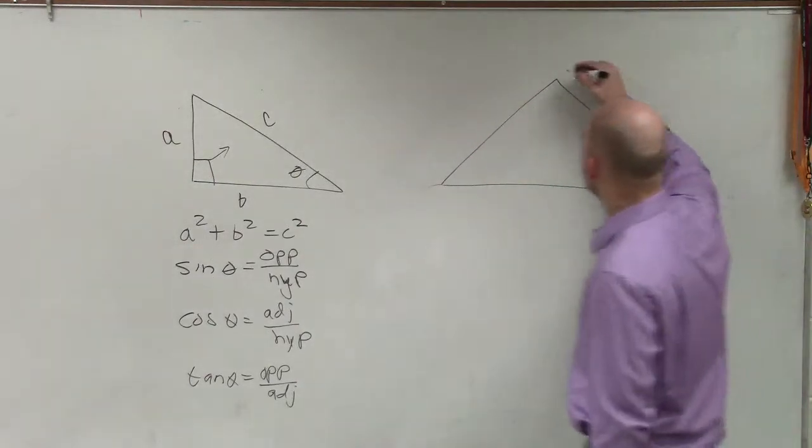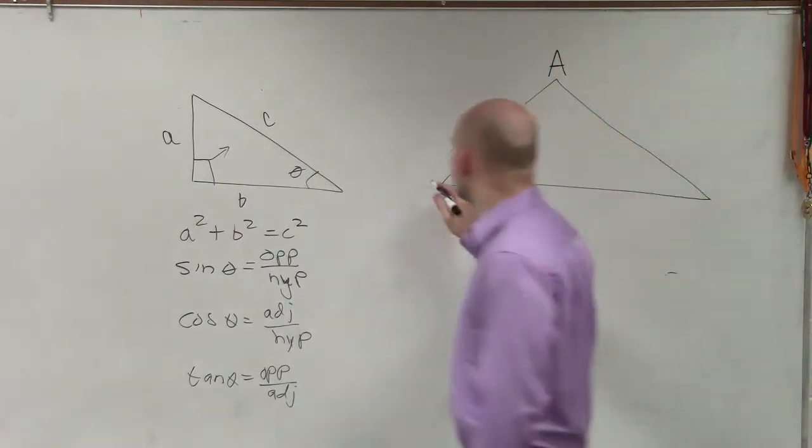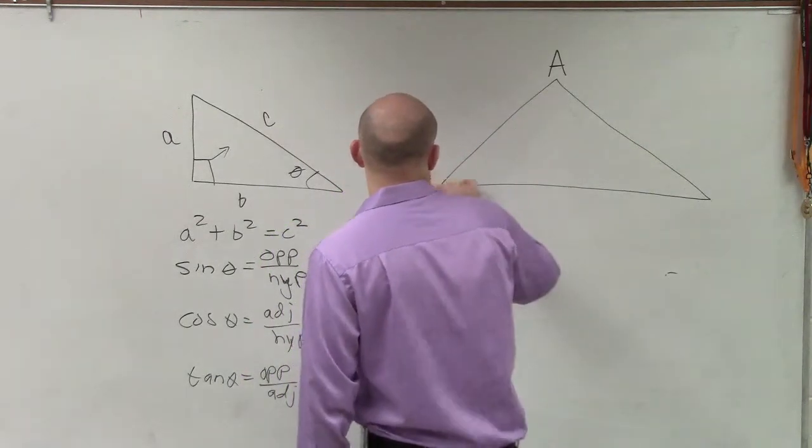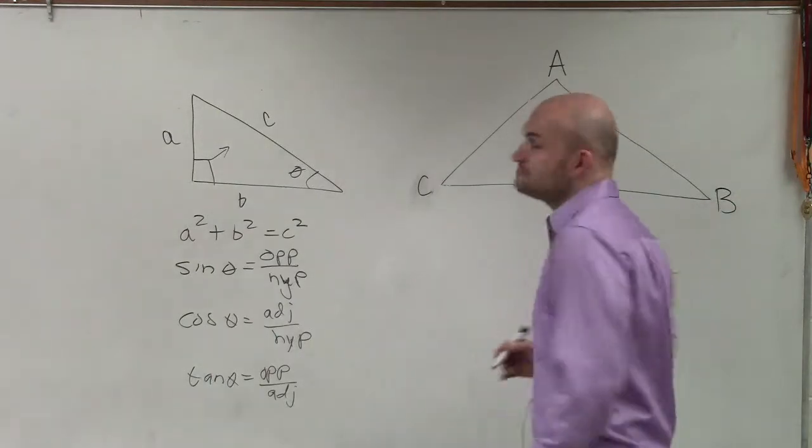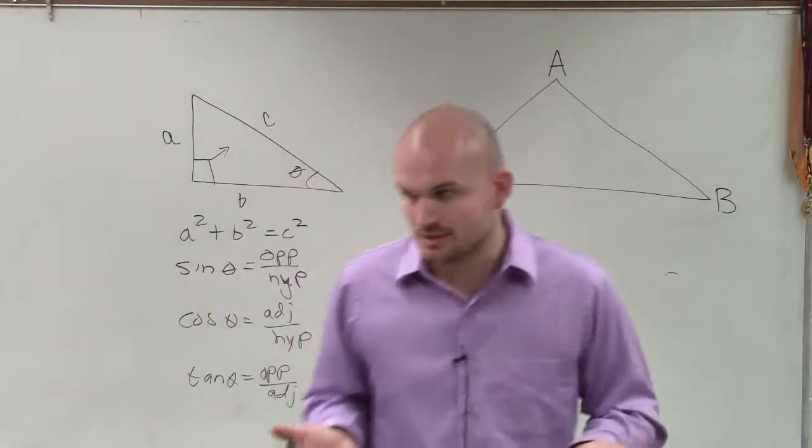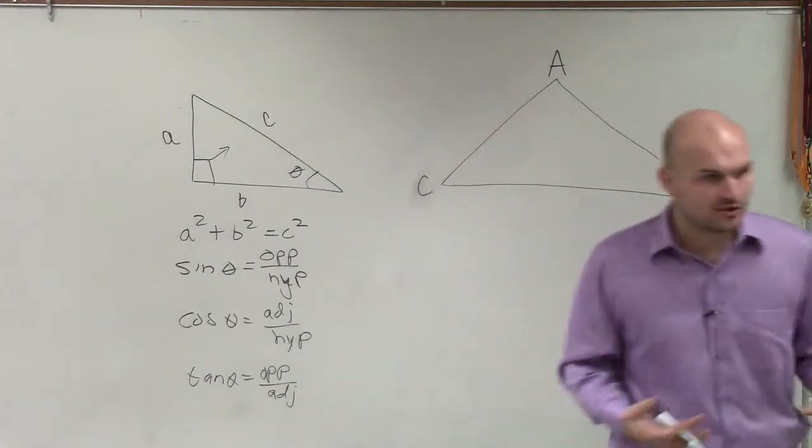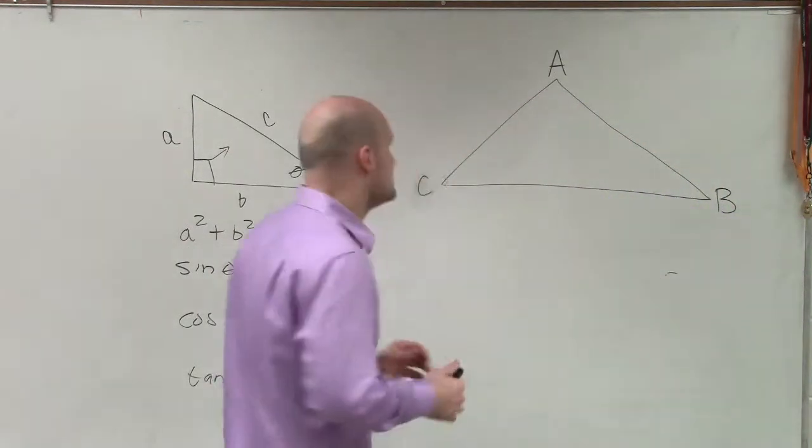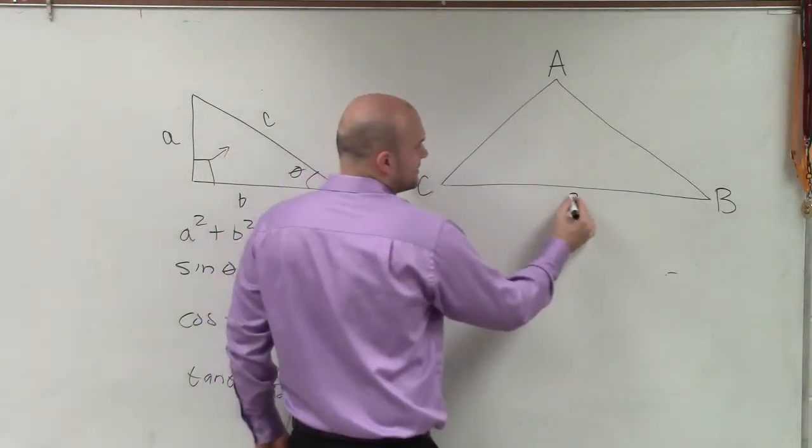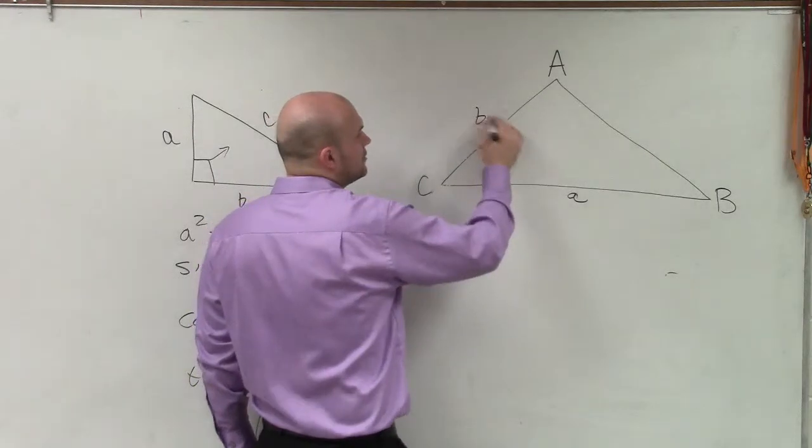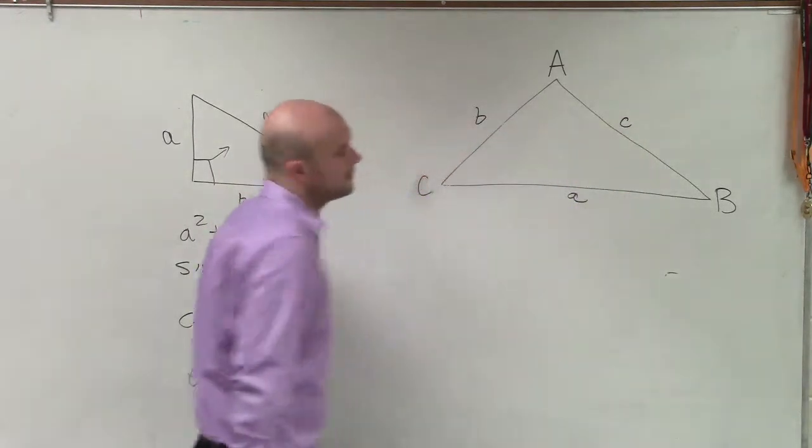So an oblique triangle, we're still going to use A, B, and C. But now I'm going to use big letters. I'm going to use big letters for the angles. So from now on, when you guys see a capital letter for your triangle, know that that represents the angle. Because the opposite side length is going to be representing the length will be lowercase.